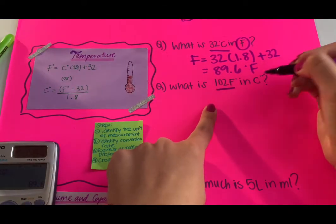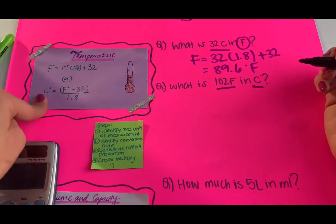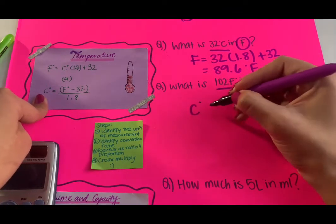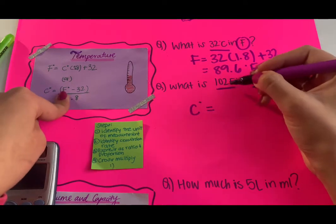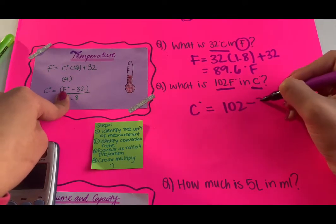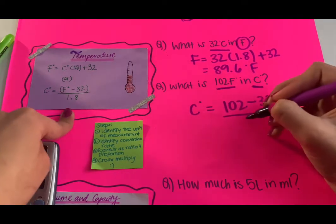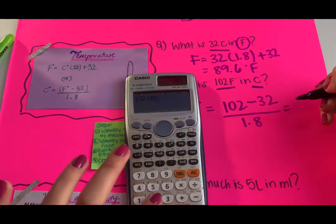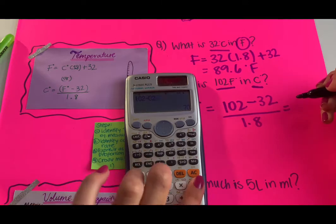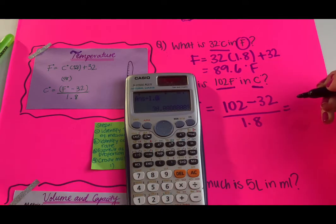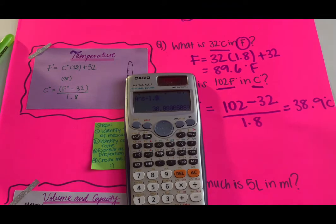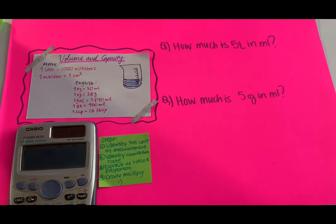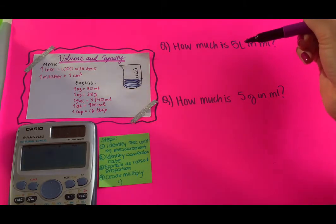The other question: what is 102 degrees Fahrenheit in Celsius? We take the Celsius equation: C = (F − 32) ÷ 1.8. Replace F with 102: 102 minus 32 is 70, divided by 1.8 gives 38.8888, which is approximately 38.9 degrees Celsius.